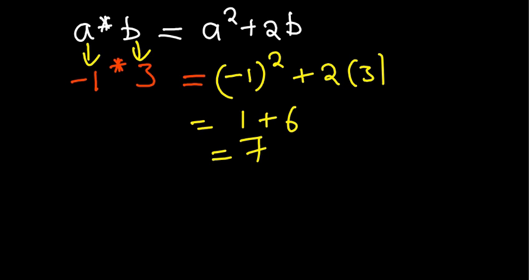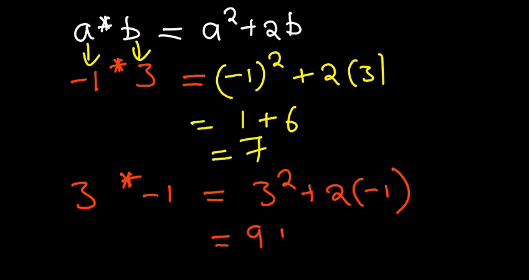Then the other part is saying we have to find 3 star negative 1, which is equal to: we have 3 squared plus 2, and then our b is negative 1, so plug in negative 1. So then we have 3 squared is 9, and then 2 times negative 1 is minus 2, giving us the answer of 7.